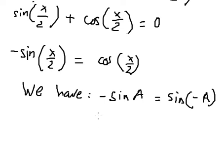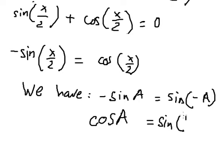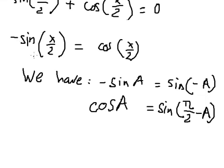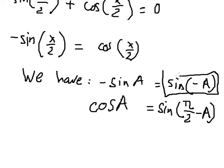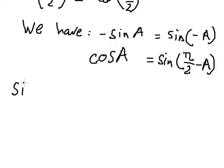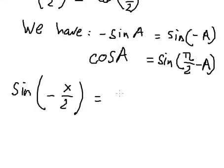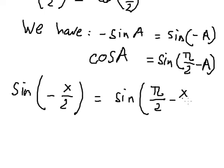The next formula: cosine A equals to sine of (π over 2 minus A). So now we need to change this one into that form. We have sine of negative S over 2.